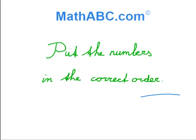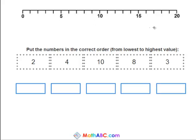Put the numbers in the correct order. We see here above a number line, and this number line starts at 0 and goes all the way to 20. What I want you to do is put the numbers in the correct order from lowest to highest in value, from smallest to biggest. So we have the numbers 2, 4, 10, 8, and 3. So let's put these numbers now on the number line.